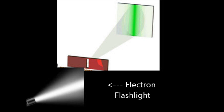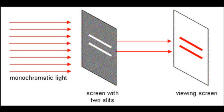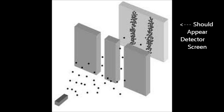That was basically what they expected, because a particle would do the same thing. If you throw baseballs through a slit, they either hit the wall or pass through the slit and hit in the formation of the slit. So they thought: what would happen if we had two slits? Based on logic and their understanding of particles, they predicted that the electrons would either hit the wall or pass through, creating two lines on the viewing screen — one for each slit.